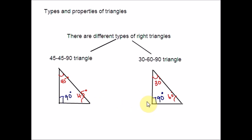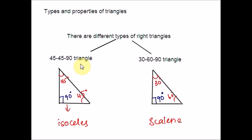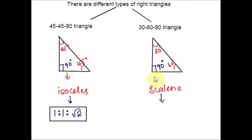Now let us move to the next type: the 30-60-90 triangle. As the name indicates, it is a right triangle in which the other two angles are 30° and 60°. All three angles are different, so the sides are also of different lengths — making it a scalene right triangle. The side ratio for a 45-45-90 triangle is 1 : 1 : √2, and the side ratio for a 30-60-90 triangle is 1 : √3 : 2.